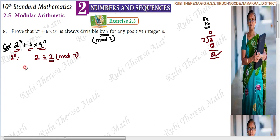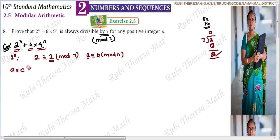Now we will learn the theorem. A into C — if A is congruent to B mod n, that is the general format. So the same operation should be done to B also. If you add some integer to A, the same integer should be added to B. If you are multiplying some integer C with A, you should multiply the same integer C with B also. That is the theorem.